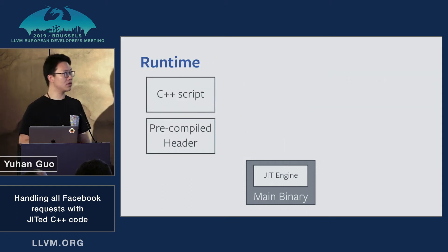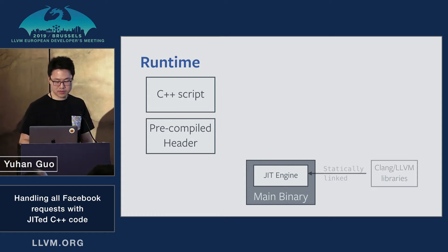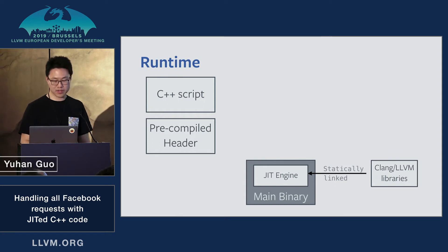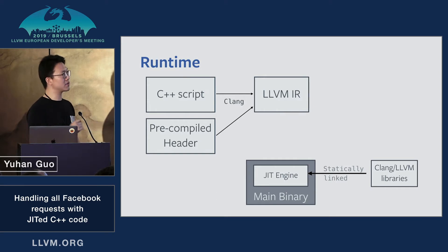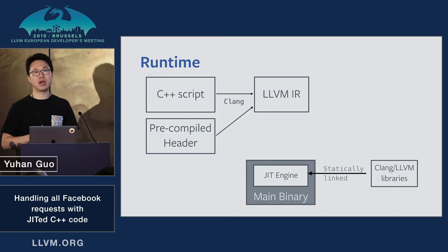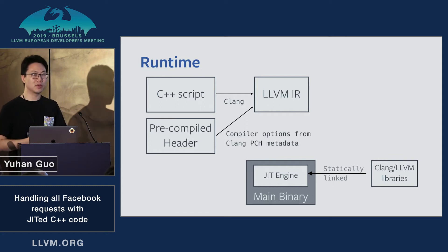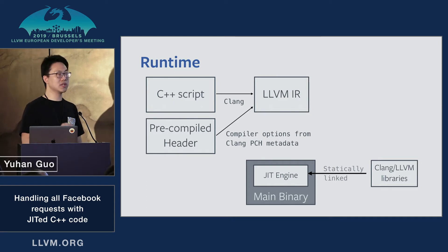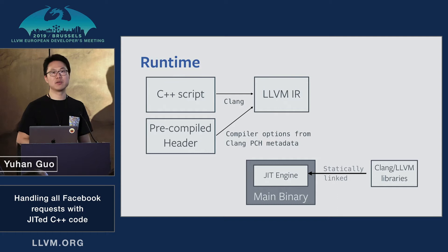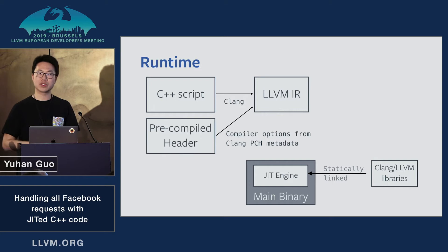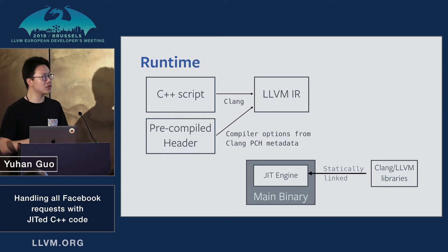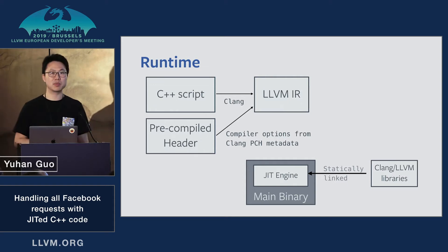Zooming in on how it works: in the main binary, the JIT engine has Clang and LLVM libraries statically linked in, so the main binary itself is fully capable of doing everything. At runtime it takes the C++ script as well as the pre-compiled header and uses Clang to convert them to LLVM intermediate representation. To ensure compatibility, we extract all the compiler options from the Clang PCH metadata — essentially reverse-engineering the Clang PCH validator API — to infer language options, target options, and preprocessor options, then use that same set of compiler options to compile the C++ script at runtime.